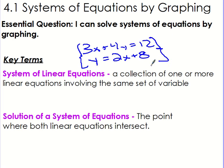This is a system, and the solution is whatever combination of x and y is going to work for both of these equations — what combination will make the top one true and also make the bottom one true. Another way to look at that is which combination of x and y, or which point, is on both of these lines.